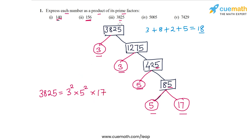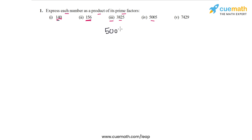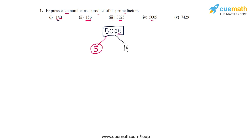That completes part 3. Now let's do the prime factorization of the number in part 4, which is 5005. This number is not even and not a multiple of 3, because the sum of its digits is 10, which is not a multiple of 3. However, it is a multiple of 5 because its last digit is 5. Dividing 5005 by 5 leaves us with 1001.